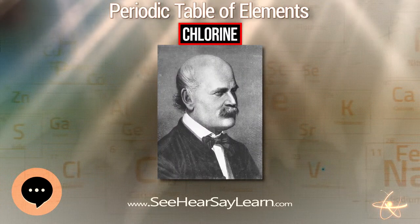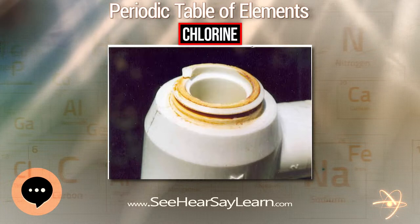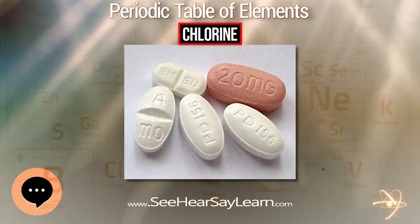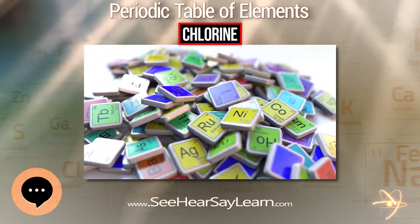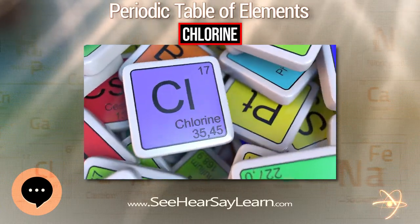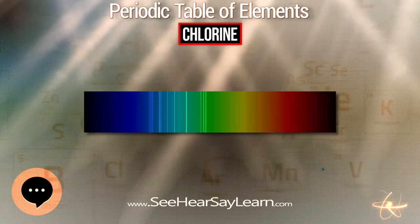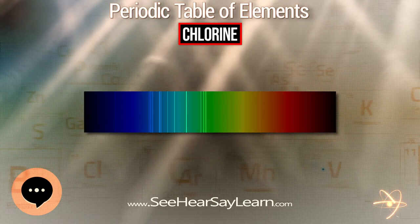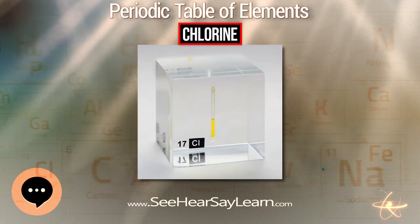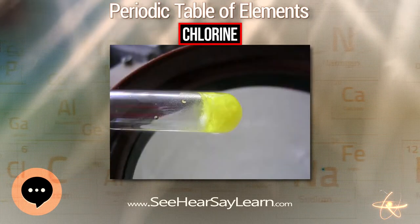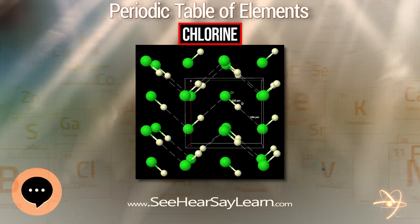The other chlorine isotopes are all radioactive, with half-lives too short to occur in nature primordially. The most commonly used in the laboratory are ³⁶Cl and ³⁸Cl, which may be produced from the neutron activation of natural chlorine. The most stable chlorine radioisotope is ³⁶Cl. The primary decay mode of isotopes lighter than ³⁵Cl is electron capture to isotopes of sulfur; that of isotopes heavier than ³⁷Cl is beta decay to isotopes of argon. ³⁶Cl occurs in trace quantities in nature as a cosmogenic nuclide, produced in the atmosphere by spallation of ³⁶Ar by interactions with cosmic ray protons.